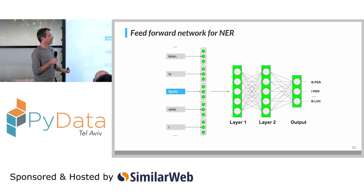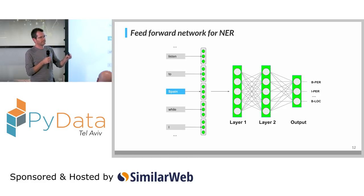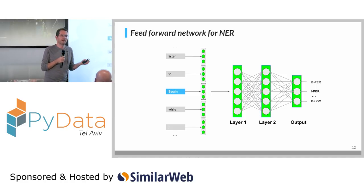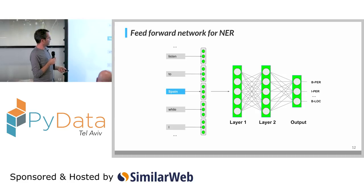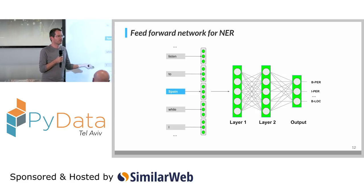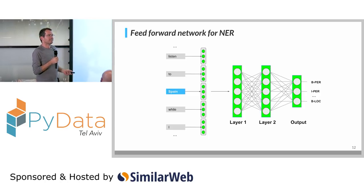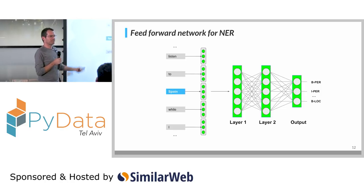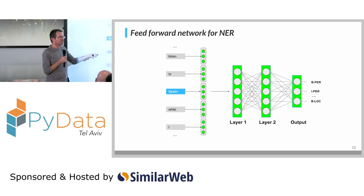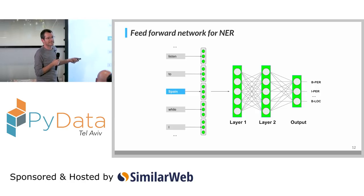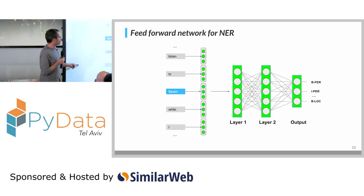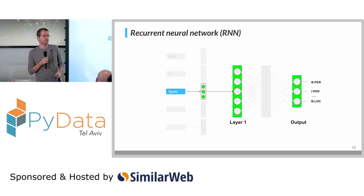You see no feature engineering needed — you just need to break the text into words and have an embedding library. But the limitation here is the context: we only capture two words before and two words after. What if the evidence for a word being a name is somewhere else in the sentence? In order to capture that, we may use a recurrent neural network, which is better for this kind of case — an RNN.